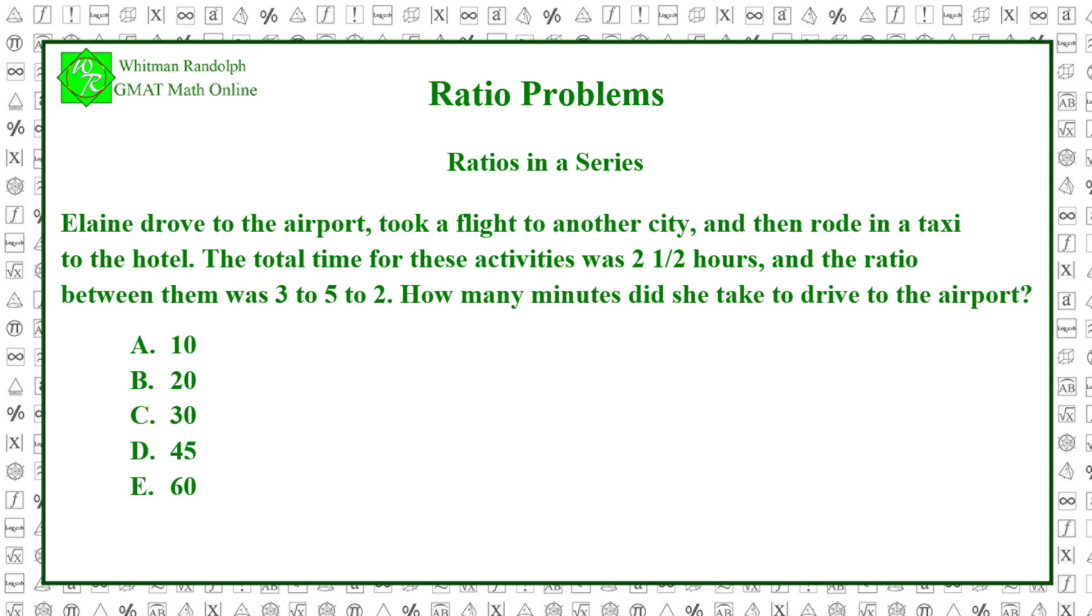Let's find the solution. Elaine's trip has three parts, and they have the ratio 3 to 5 to 2. If we add these three numbers, we get 10. So, the first part was 3 tenths of the trip, the second was 5 tenths, and the third 2 tenths.